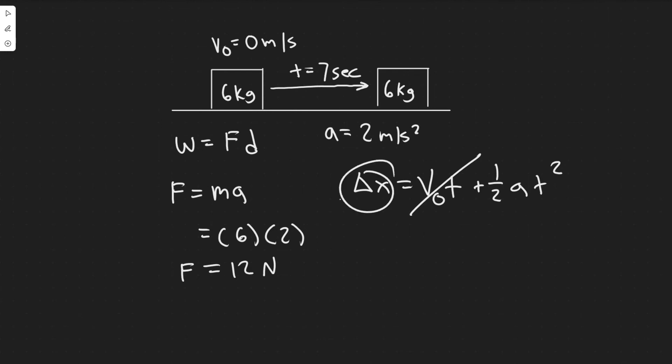Really the distance d or just delta x is one half times a, which is two, times seven squared. This is just going to become one. One half times two is one. So it's just seven squared, which is 49. And since we're dealing with standard units, it's just going to be 49 meters.